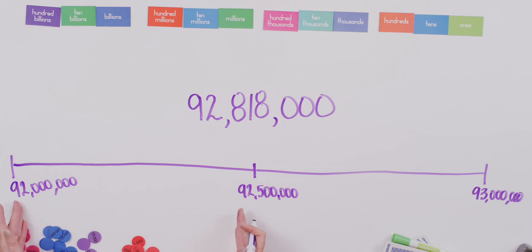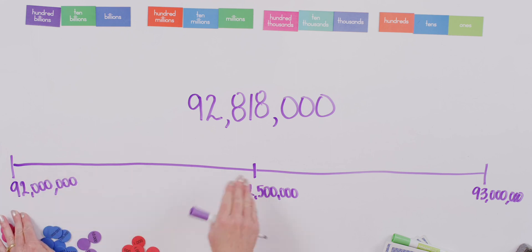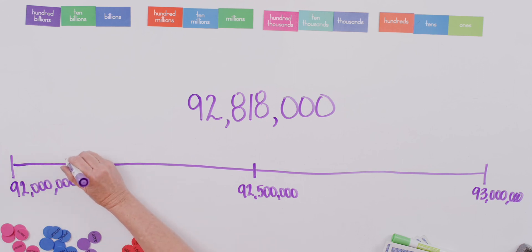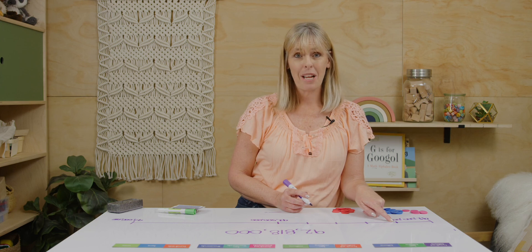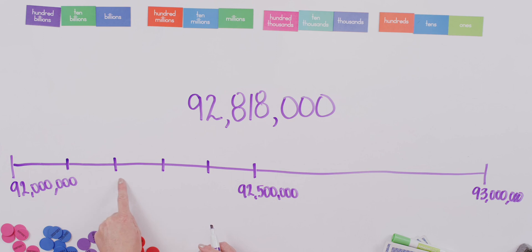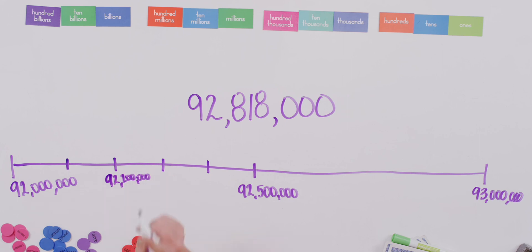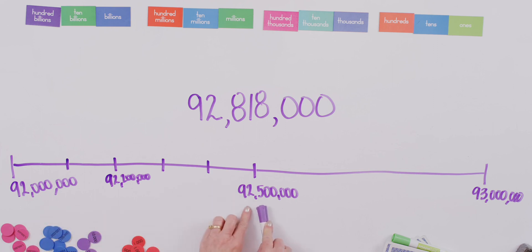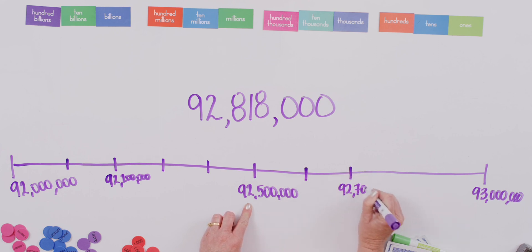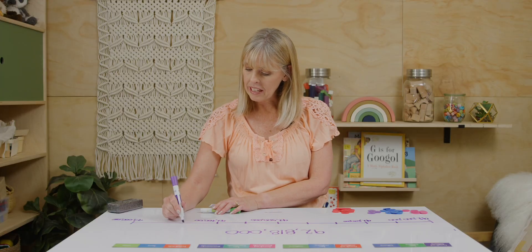Just by looking at our number line, you probably already have a guess where our number goes. Let's add some increments between these two numbers — we have 500,000 between them, so let me do five different places. Our next number would be 92,100,000, then 92,200,000, 92,300,000, 92,400,000, and then 92,500,000 in the middle. We would continue: 92,600,000, 92,700,000, 92,800,000, and 92,900,000, before we get to 93 million.